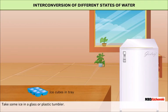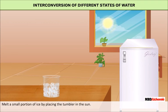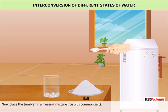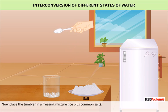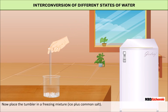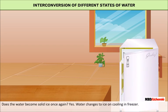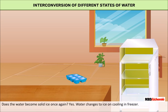Take some ice in a glass or plastic tumbler. Melt a small portion of ice by placing the tumbler in the sun — you now have a mixture of ice and water. Now place the tumbler in a freezing mixture of ice plus common salt. Does the water become solid ice once again? Yes, water changes to ice on cooling.